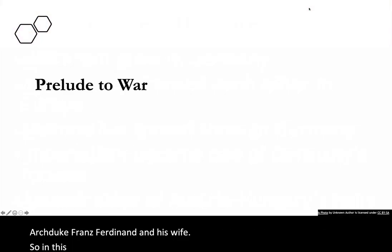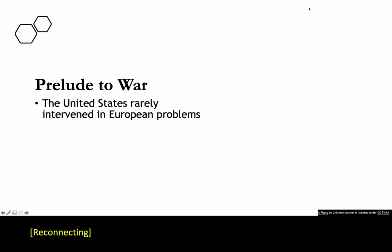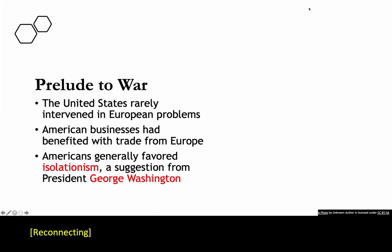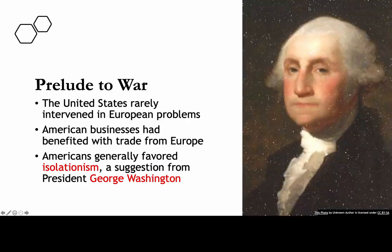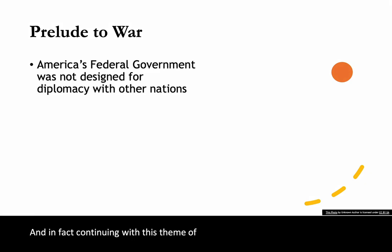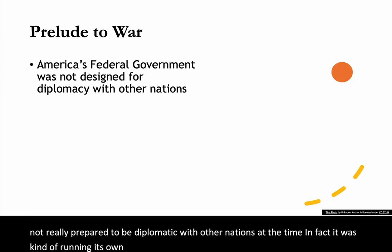In the last section of the reading, Prelude to War, the authors discuss why the United States got involved in the Great War. First of all, the United States rarely intervened in any European problems. In fact, the only thing the United States was doing with Europe at the time was trading. Americans did favor staying out of the war — a suggestion going all the way back to President George Washington leaving office in the late 1780s. The United States was not really prepared to be diplomatic with other nations, and it was actually running its own imperial project with the Philippines and Cuba.